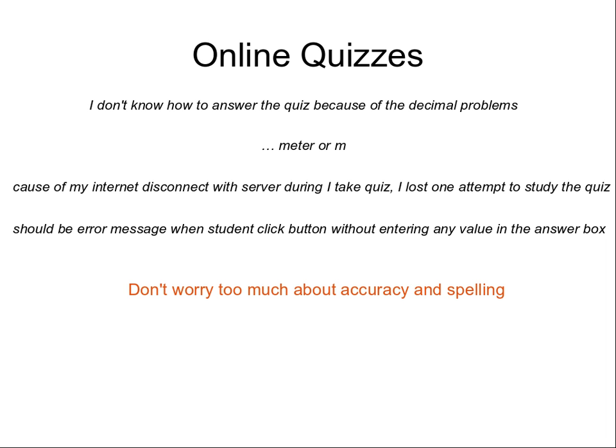Sometimes questions are set up such that only one specific answer is accepted. There may be other valid answers, and over time I'm adding those valid answers. But until I add them all, the software will automatically mark you wrong if you don't give a currently accepted answer. In that case, just notify me and I'll manually mark your quiz and change your mark from incorrect to correct. That's a limitation of automatic online checking - it's not feasible to automatically accept all possible answers.